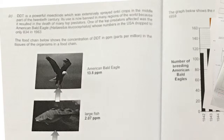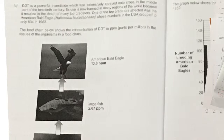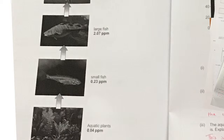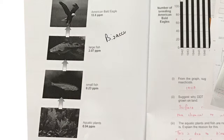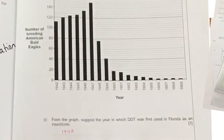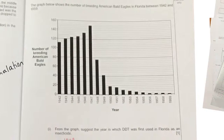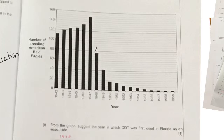DDT is a powerful insecticide extensively sprayed onto crops in the mid-20th century. Its use is now banned in many regions because it caused the death of many top predators, including the American bald eagle, whose numbers in the USA dropped to only 834 in 1963. The food chain shows the concentration of DDT in parts per million — this is our example of bioaccumulation, where the concentration increases further up the food chain. From the graph, DDT was first used in Florida around 1948, where the first drop occurs.